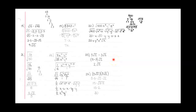Those have to be exactly the same. If they are, then I just combine my coefficients, so 5 minus 3 is 2, and then I keep that radical exactly the same. It's kind of like if you had 5x minus 3x, you would do 5 minus 3 times x, and you would get 2x.